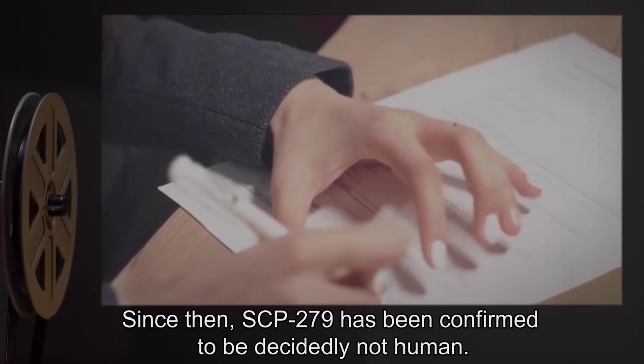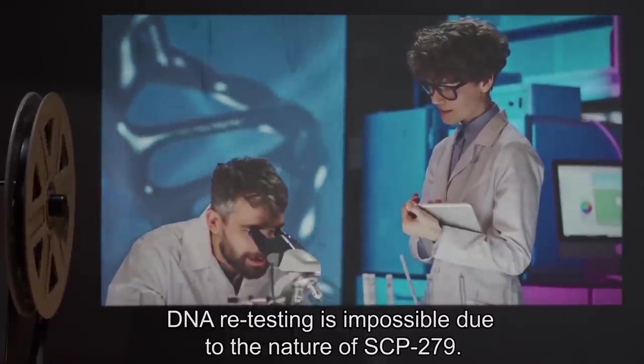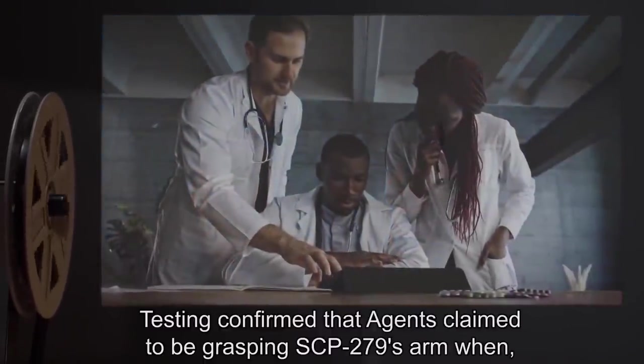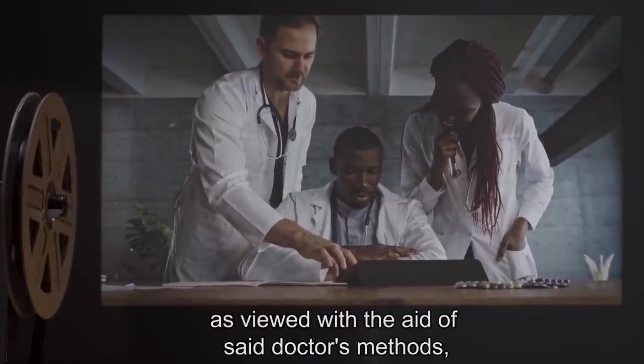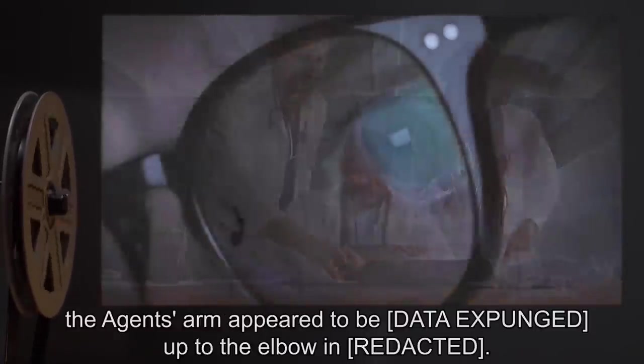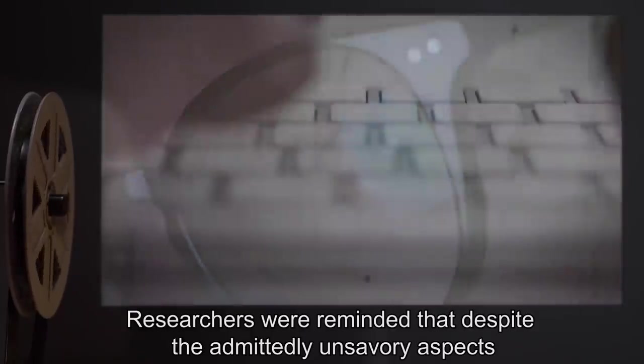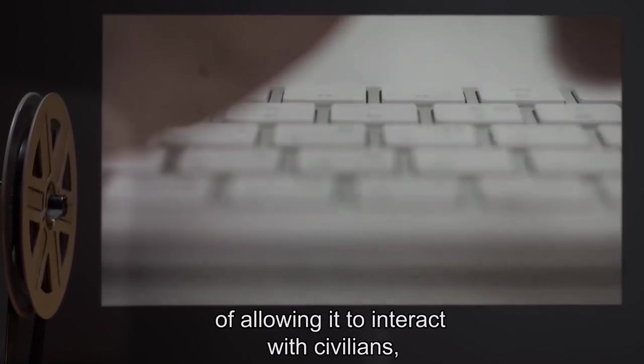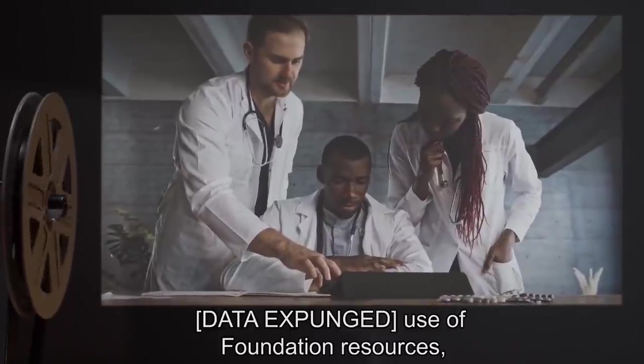Since then, SCP-279 has been confirmed to be decidedly not human. DNA retesting is impossible due to the nature of SCP-279. Testing confirmed that agents claimed to be grasping SCP-279's arm when, as viewed with the aid of said doctor's methods, the agent's arm appeared to be [DATA EXPUNGED] up to the elbow in [REDACTED]. Researchers were reminded that despite the admittedly unsavory aspects of allowing it to interact with civilians, [DATA EXPUNGED] use of Foundation resources, coupled with the fact that very little is known of SCP-279's motives.